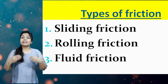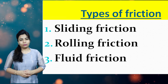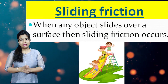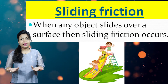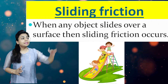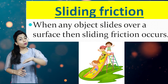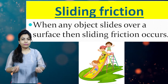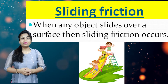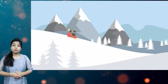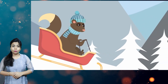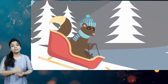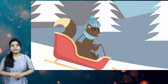Now coming to the types of friction. The first type is sliding friction. The name itself tells that whenever any object slides over the surface, it is called sliding friction. Here ice skating is done — when you do ice skating on the snow, the snow applies friction in the opposite direction. That is sliding friction.